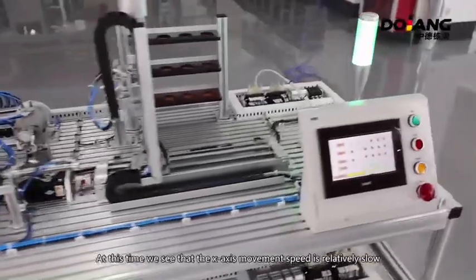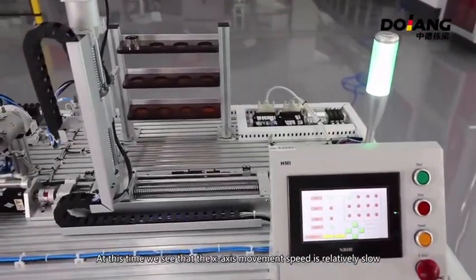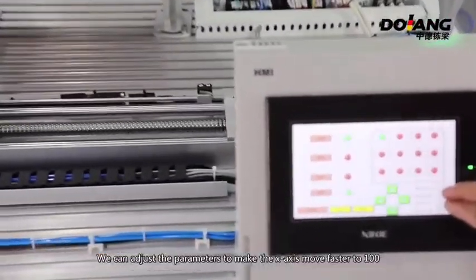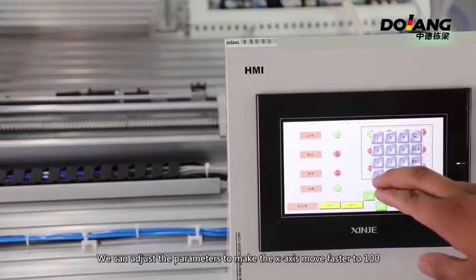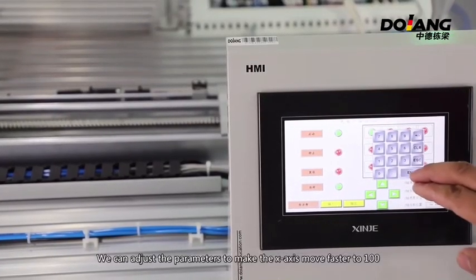At this time, we see that the X-axis movement speed is relatively low. We can adjust the parameters to make the X-axis move faster to 100.